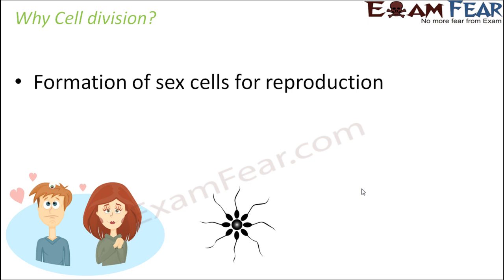In human beings, the male gamete is the sperm and the female gamete is the egg or the ovum. Fusion between the sperm and the ovum gives rise to the zygote, and the zygote after repeated cell divisions forms the baby. The baby again after repeated cell division gradually grows to become an adult, and that is how life continues. Starting from the birth of a living organism through its growth and development, cell division plays a very important role.